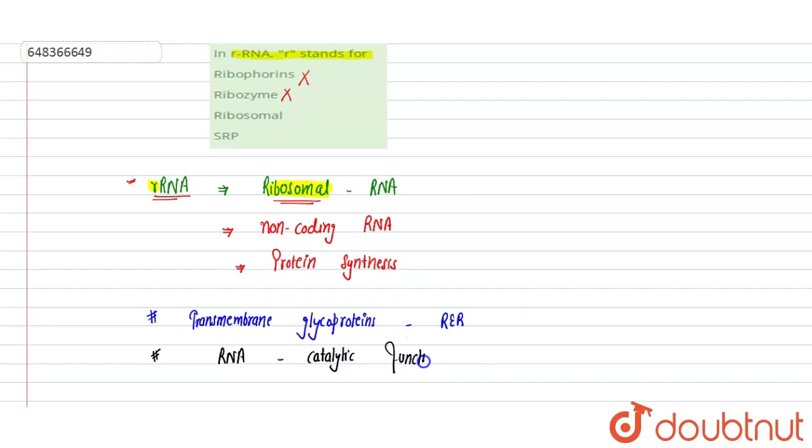Ribosomal RNA is one type of ribozyme, but here r doesn't represent ribozyme. Otherwise ribosomal RNA itself is a ribozyme, so this is incorrect. Ribosomal - yes, this is correct, this is correct.